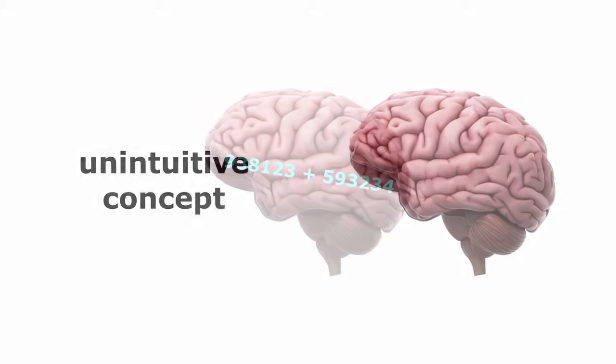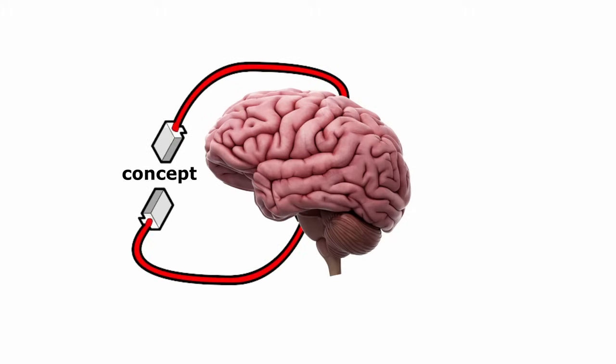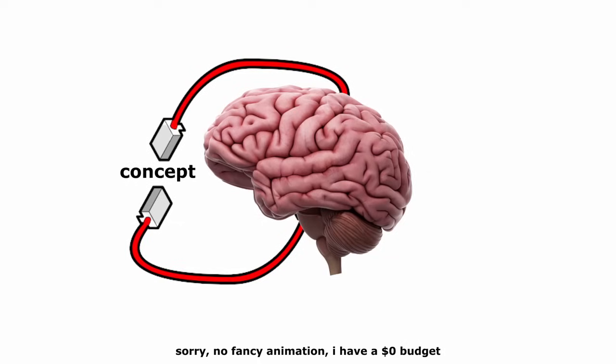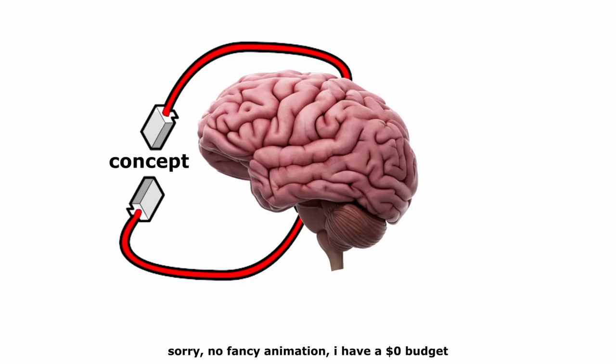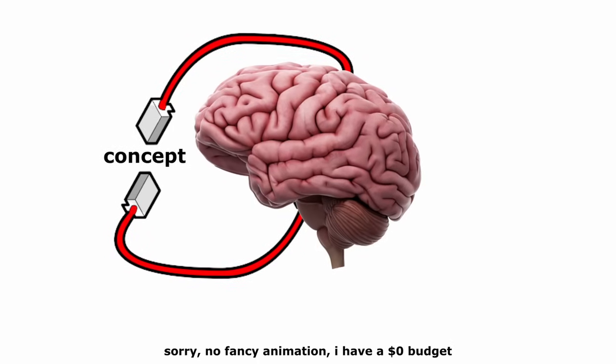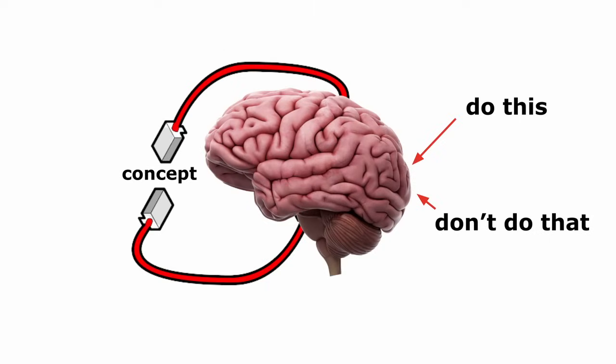But if something is unintuitive, that means your brain disagrees with it or goes against what you've learned previously, and you need to fix that. So what if you don't have that hardwiring? Then you need to rewire your brain to accept the concept as an absolute truth, and that's the learning process. And it's worth noting that there's no actual magic here. Ultimately, it's up to your brain to do this rewiring. The best you can do is set your brain up for success by optimizing the information it receives and works with. So let's get into how you do that.